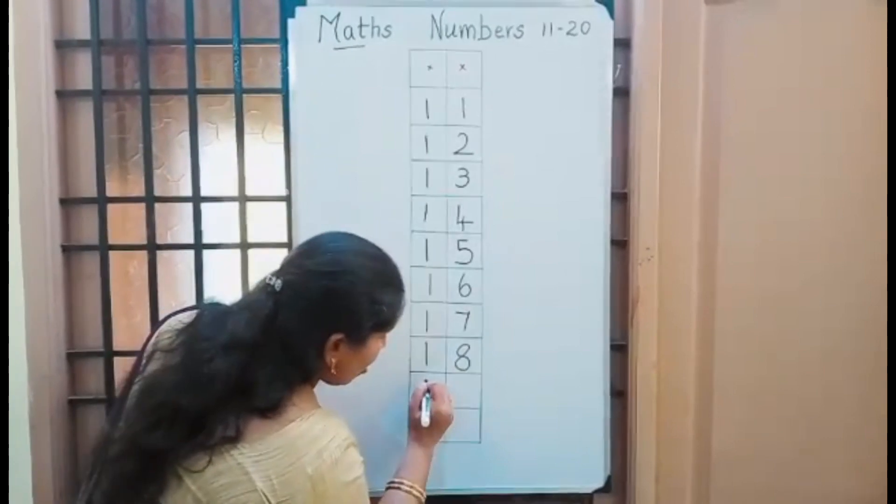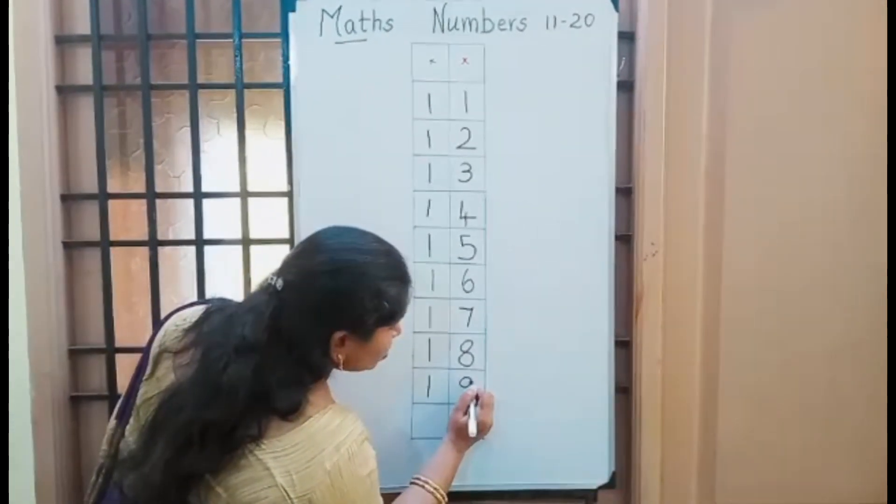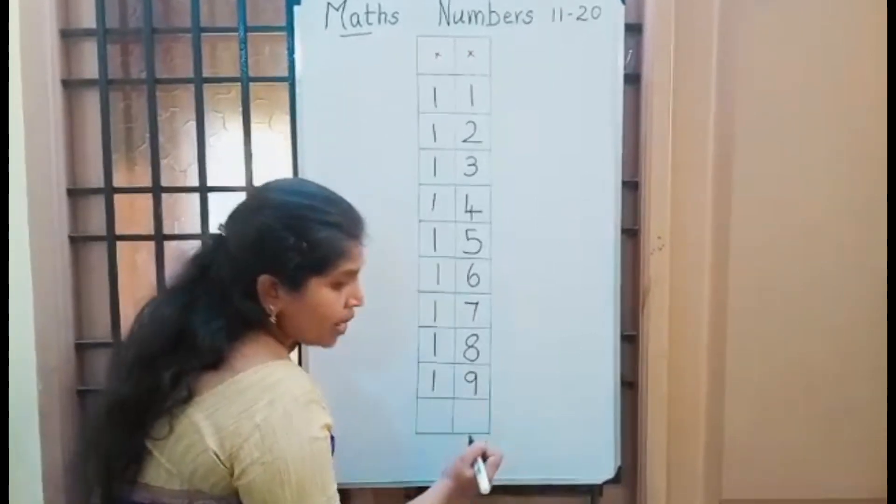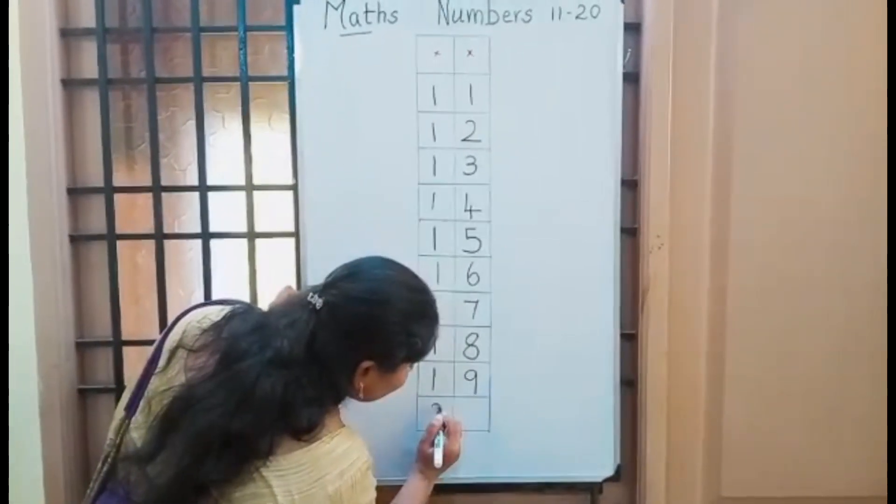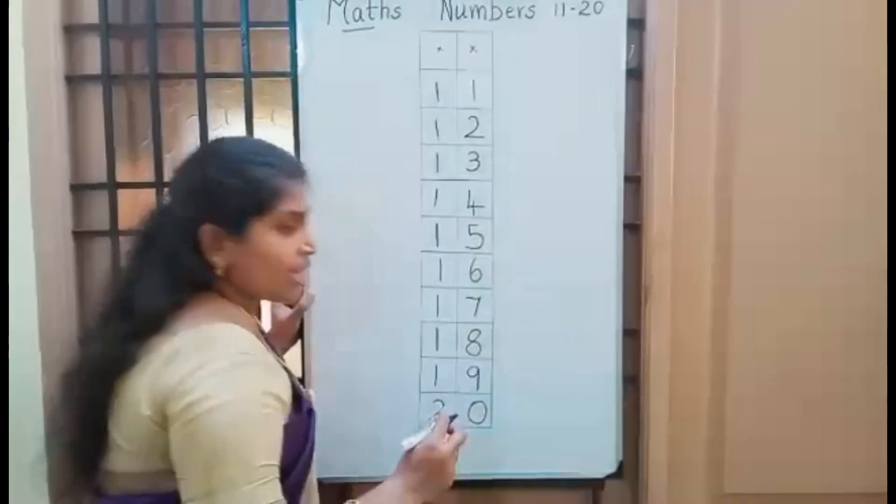1, 9, 19: 1 in 10s place and 9 in 1s place. 2, 0, 20: 2 in 10s place, 0 in 1s place.